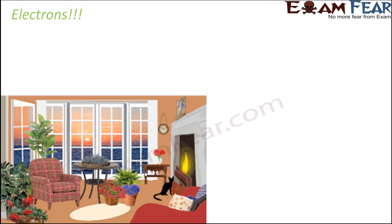Before we talk about electrons, let's see where the concept of electrons comes into picture. Anything that we see around us — whether it is the chair, the table, the cat, the fire, windows, clock or whatever — they are nothing but matter. Whether it is a living organism or a non-living organism, everything that we see around us is matter.